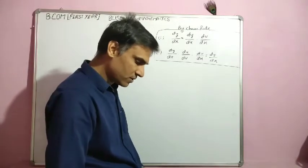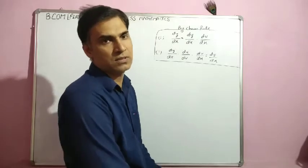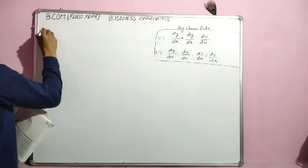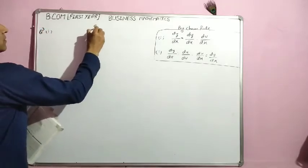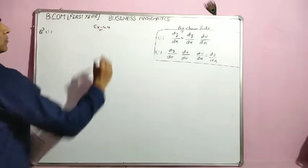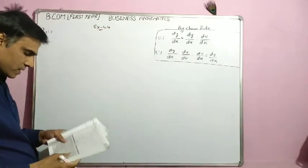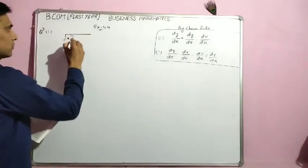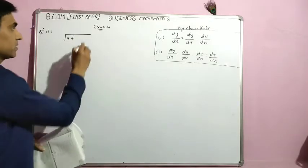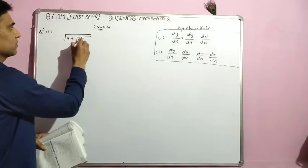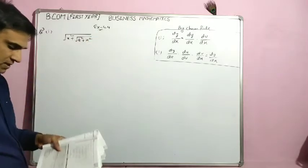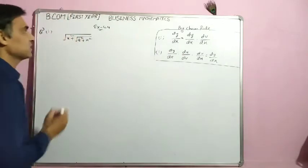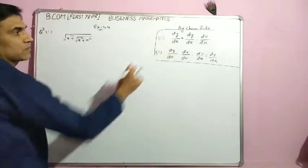Exercise 4.4, third question, first part. The expression is: root of (x² + root of (a² + x²)). We need to differentiate this with respect to x. We have two formulas applicable here.